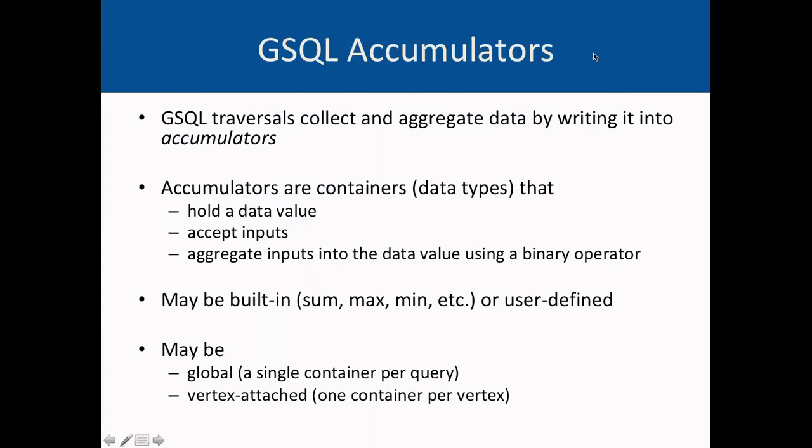GSQL traversals collect and aggregate data by writing it into accumulators, which are containers that hold the data value, accept inputs, and aggregate these inputs into the data value using a binary operator. GSQL comes with a bunch of built-in accumulators that reflect the aggregations you would expect from SQL, and they also allow users to define their own. Accumulators may be global, in which case a query has a single copy of the accumulator throughout its lifecycle, or they can be vertex-attached, in which case every vertex has its own copy of this container.